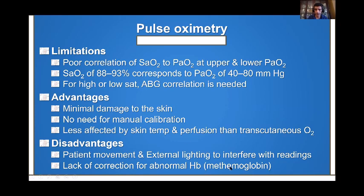The advantage of pulse oximetry is that because it measures light, it does not cause skin irritation and does not need frequent calibration. It is less affected by skin temperature or perfusion changes. The disadvantage is that it has a lot of artifacts when patients move or when there is ambient light. Also, it does not measure abnormal hemoglobin types such as methemoglobin or carboxyhemoglobin. If you need to measure methemoglobin, use a blood gas or co-pulse oximetry instead.